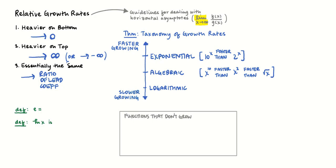That was what I meant by the ratio of the leading coefficients. I also need to point out that there are some functions that just don't grow at all — like constants, y equals a constant, or y equals sine of x or y equals cosine of x. These are both functions that don't grow. So if you run into sine or cosine in a limit going to infinity situation involving a fraction, they can be treated like a constant because they don't grow at all.